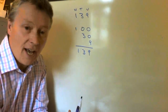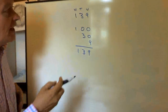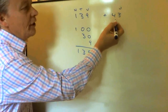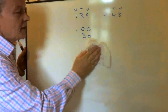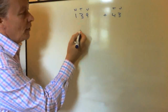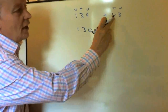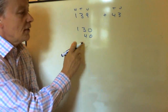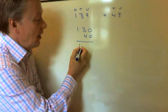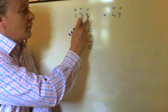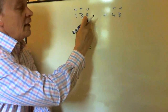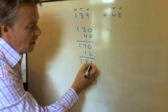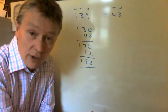We can use that fact to add two numbers together. Let's say we're going to add 139 plus 43, which has three units and four tens. That first number is actually 130, and 43 gives us 40. I've added 100 and three tens to four tens, giving me 170. Now I need to add the units together: nine add three is 12. Add those two together and the answer is 182.